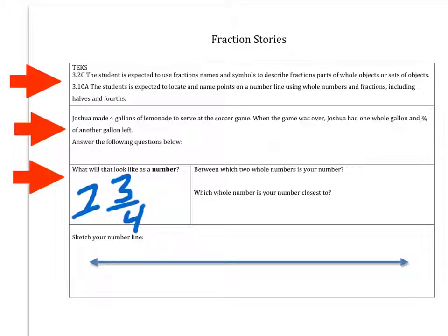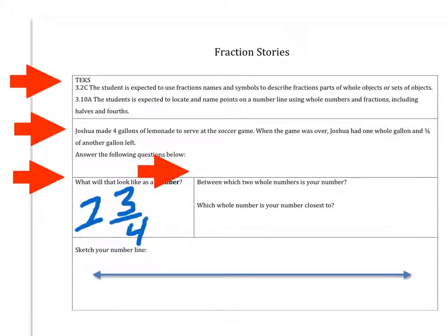Then here, we're going to look at between which two whole numbers is your number. Well, one and three-fourths is between one and two. And which whole number is this number closest to? I believe it's closer to two. Let me show you why I believe that.